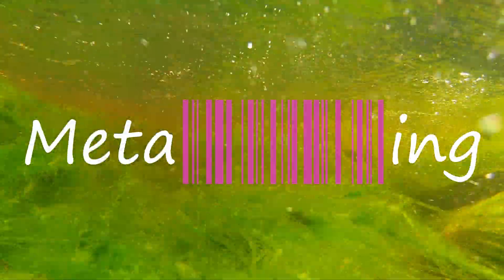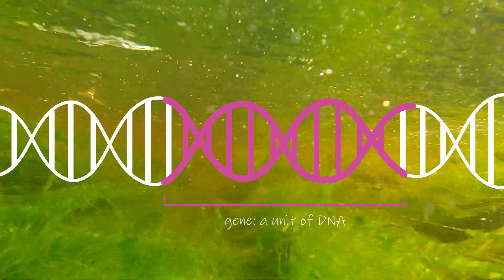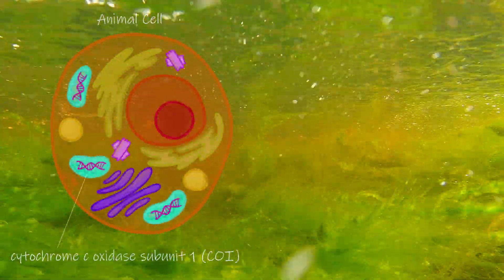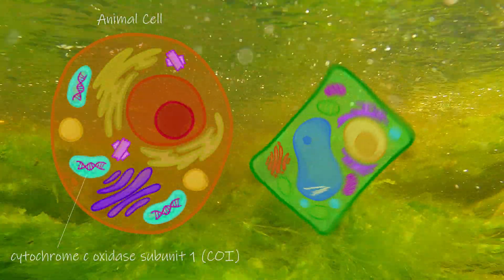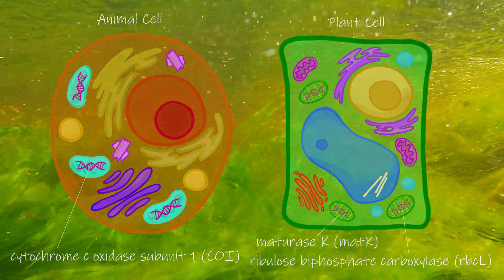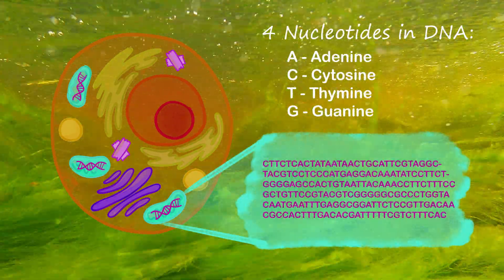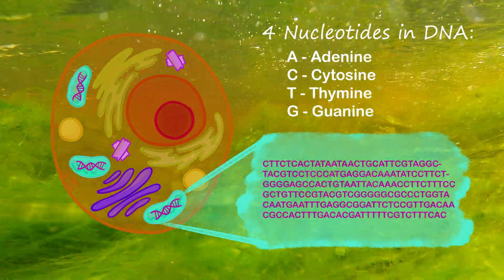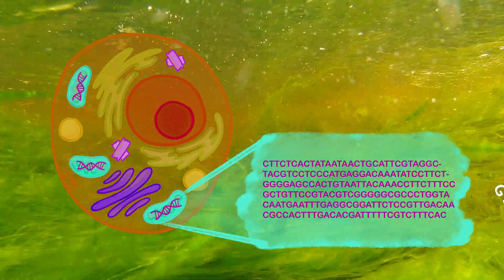The barcode in metabarcoding refers to a section of a species' DNA that differentiates it from other species. Standard barcodes are the CO1 gene in animal cells and the MATK and RBCL genes in plant cells. The unique sequence of A's, C's, T's, and G's that make up a barcode gene is like nature's name tag for the species.